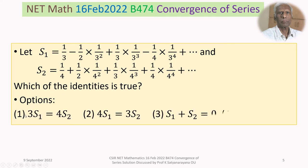Option 1: 3S1 equals 4S2. Option 2: 4S1 equals 3S2. Option 3: S1 plus S2 equals 0. Option 4: S1 equals S2. We are given two series, S1 and S2, and we have to determine the convergence of S1 and S2 and see which option is true.